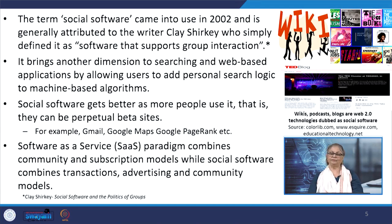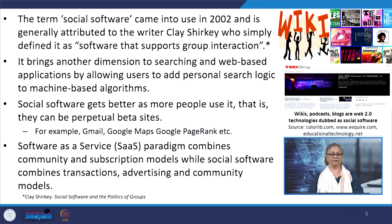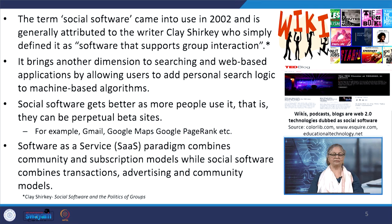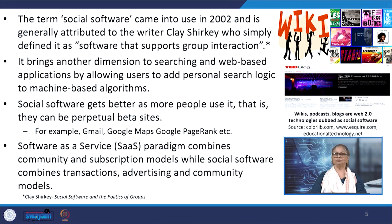The term social software came into use in 2002 and is normally attributed to the writer Clay Shirky, who simply defined it as software that supports group interaction. It has brought an altogether new dimension to searching in web-based applications by allowing us to add personal search logic to machine-based algorithms.